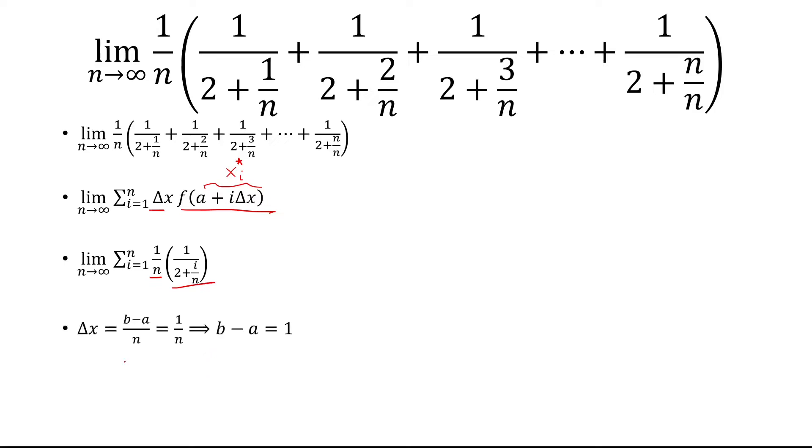So starting with the delta x, that's b minus a over n, which is 1 over n, and if you cancel out the n, you get b minus a is 1.